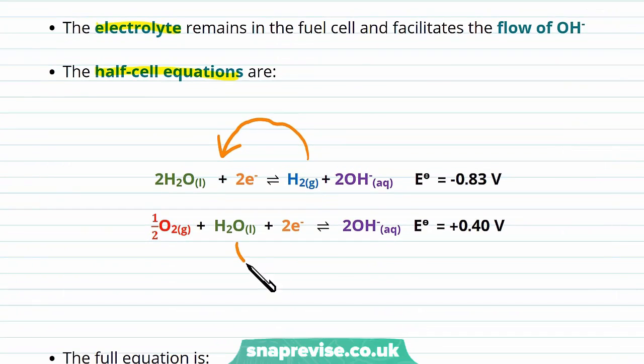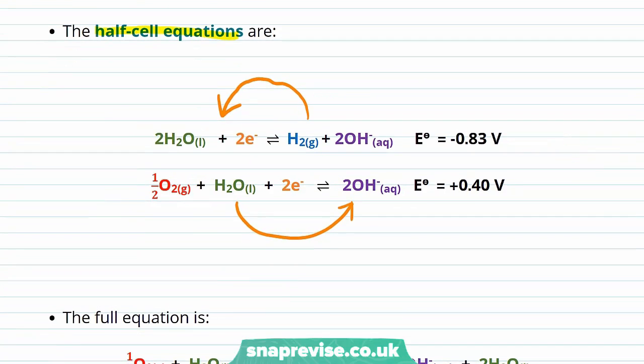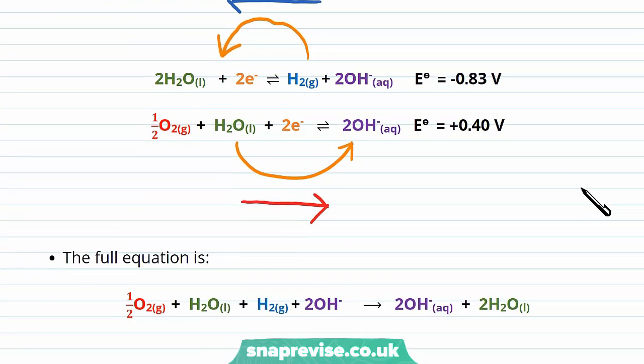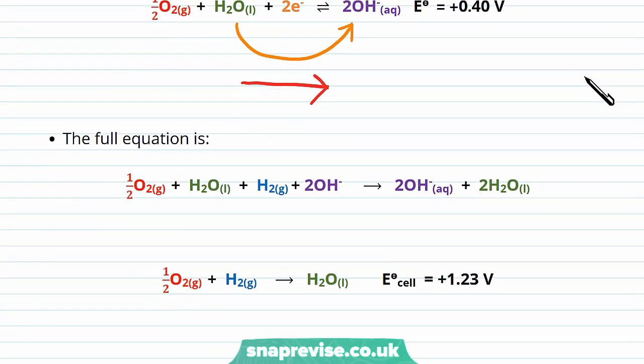Here, the reaction favours the right hand direction, and we have oxygen combining with water and two electrons to form the OH- ions, which then fuel the other side's reaction. By combining these two equations, so we have the oxidation of hydrogen and the reduction of the oxygen, we can form the full equation for the hydrogen fuel cell, which you need to know.